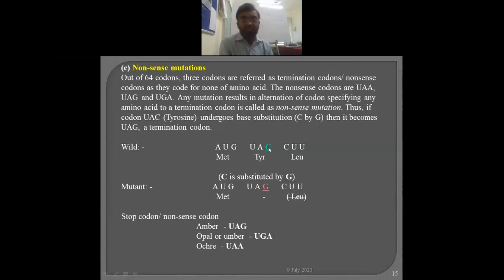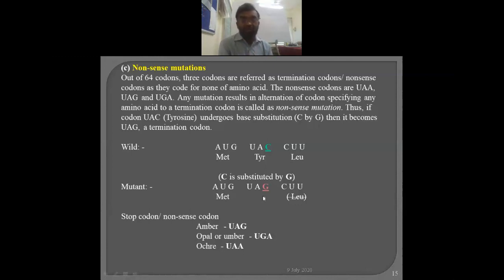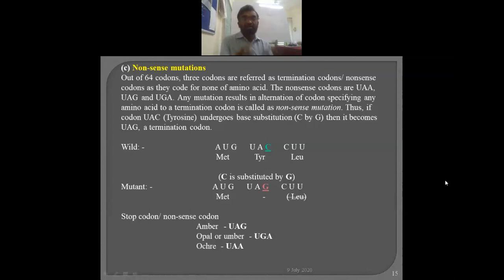Suppose mutation occurs and C is substituted by G, making it U-A-G. U-A-G is a nonsense codon coding for nothing. The ribosome incorporates methionine at A-U-G, but when it reaches U-A-G, no tRNA is available and protein synthesis stops there. Although leucine was to be coded further, it will not be possible because whenever a nonsense codon appears, the translation system stops automatically. This results in the partial synthesis of the polypeptide — only a few amino acids are incorporated and the typical structural protein is not synthesized.